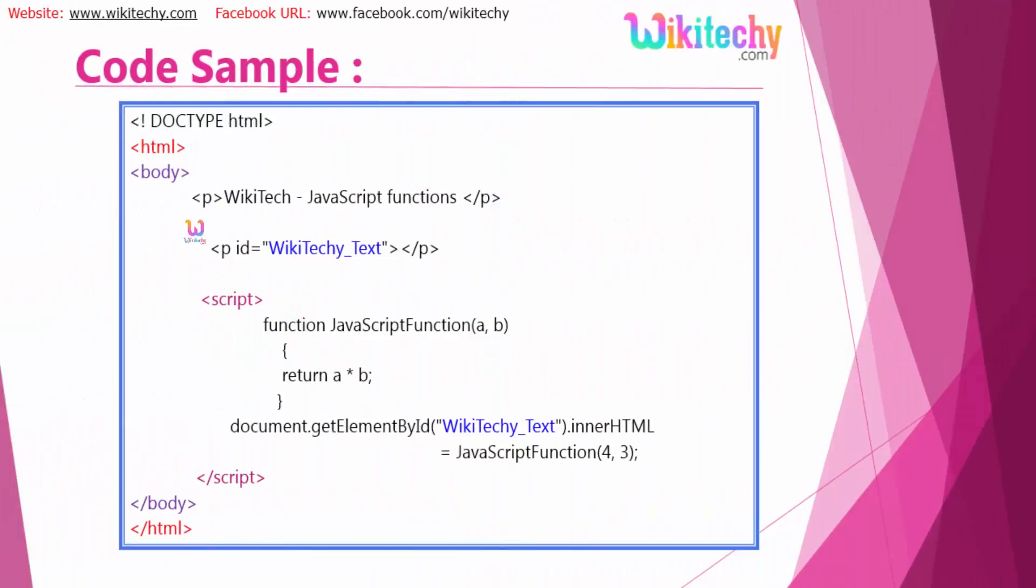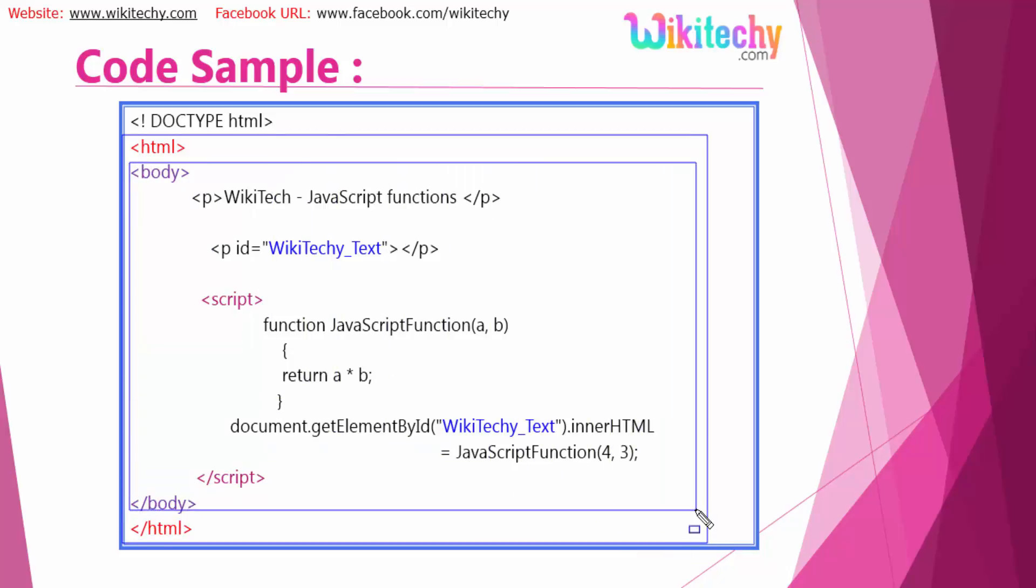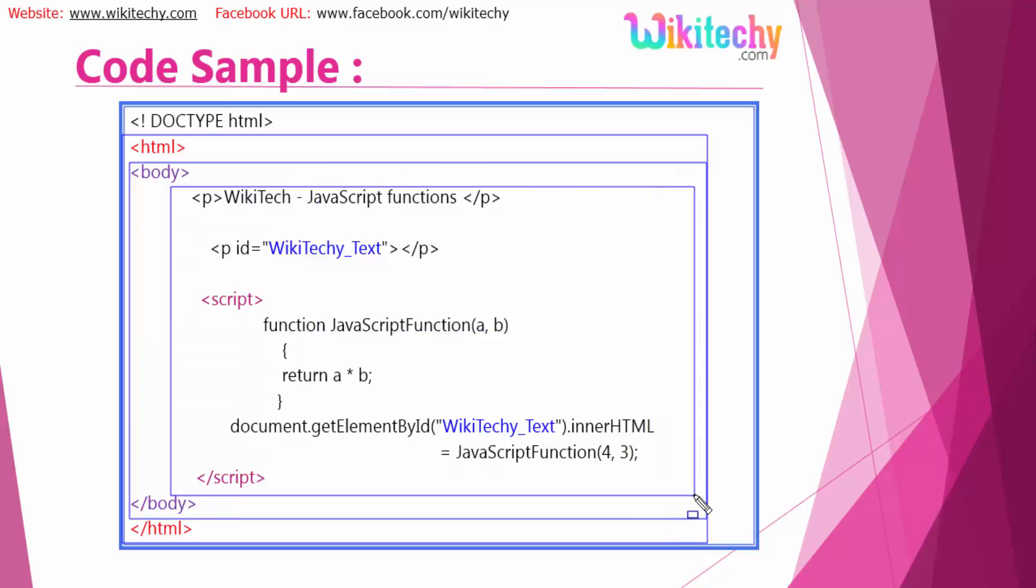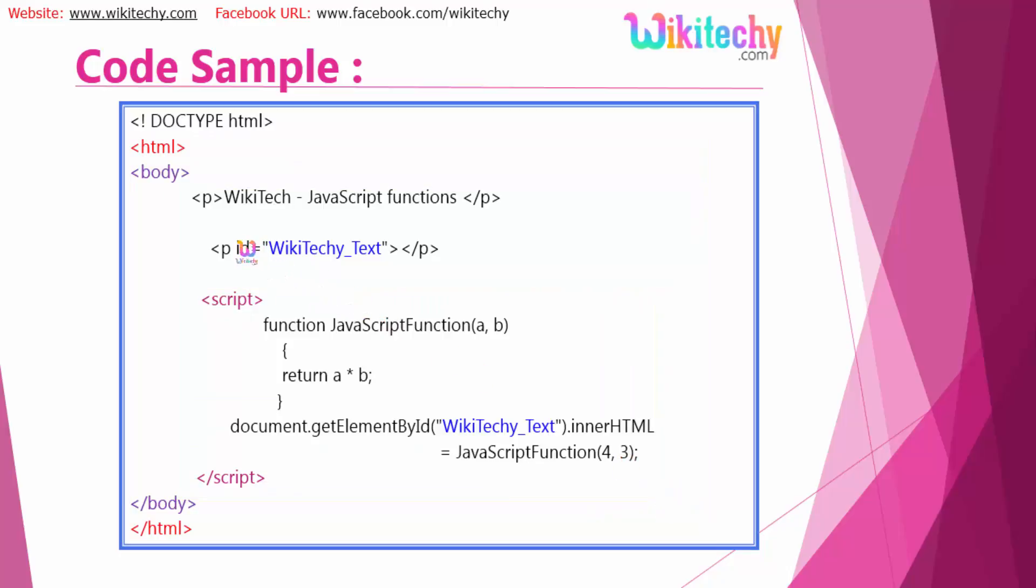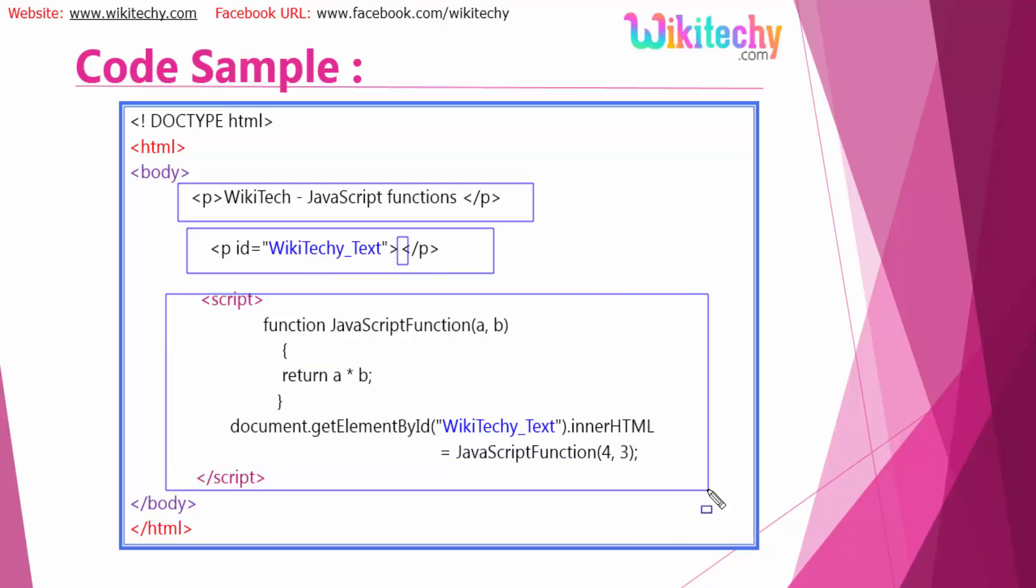Now I'm showing you a sample piece of code with HTML and a body tag. Under that body tag you have the entire code. Inside it you have the script tag. Now I have a paragraph tag, WikiTechy JavaScript function, with an id. Using this id, I can put some data here which I'm trying to show you now.